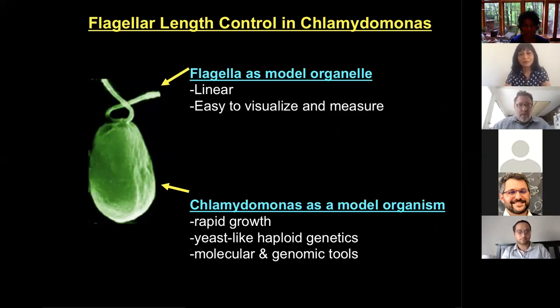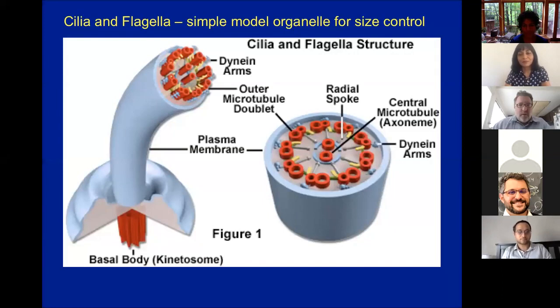So when we talk about cilia and flagella in this context, we mean eukaryotic flagella, not prokaryotic flagella. So those of you who might be studying bacterial flagella, they're really quite different structures. They share no molecular similarity whatsoever. How the bacterial flagella controls its length is also a very interesting question, but it's not what we're looking at here.